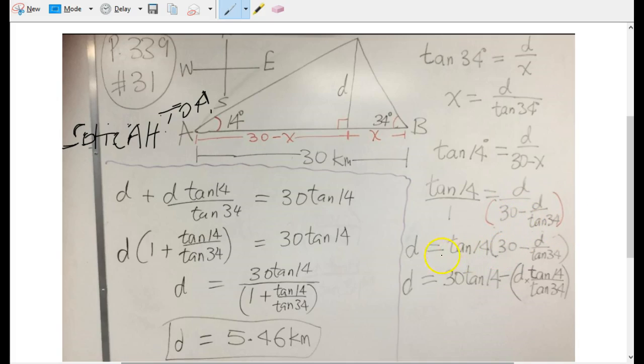Now we can do the algebra and cross multiply. Solve for d. So put this over one, that's what we did. So d times one is d, tan 14 times the quantity 30 minus d over tan 34.